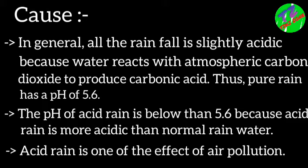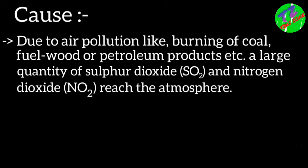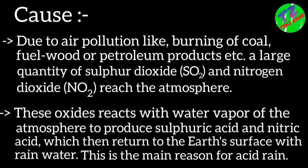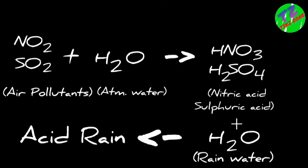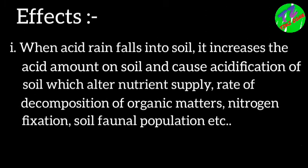Acid rain is one of the effects of air pollution, meaning air pollutants are the major cause of acid rain. Due to air pollution like burning of coal, fuel wood, or petroleum products, a large quantity of sulfur dioxide and nitrogen dioxide reach the atmosphere. These oxides react with water vapor in the atmosphere to produce sulfuric acid and nitric acid, which then return to the Earth's surface with rainwater. This is the main reason for acid rain.